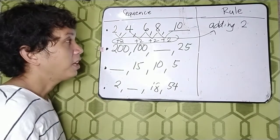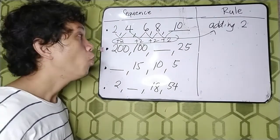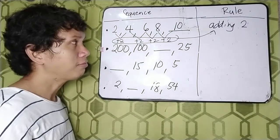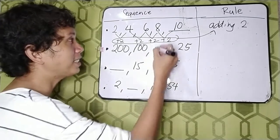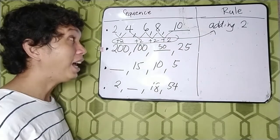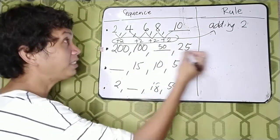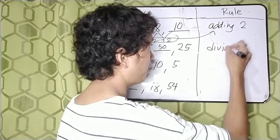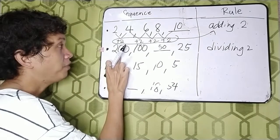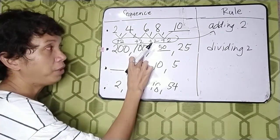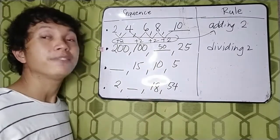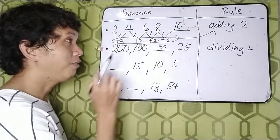200, 100, blank, and 25. What do you think is the missing term? The missing term is 50. How did you get 50? By dividing by 2. So that's our pattern or rule — dividing by 2. 200 divided by 2 is 100, 100 divided by 2 is 50, 50 divided by 2 is 25. So it's correct — dividing by 2.